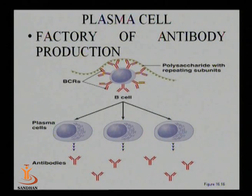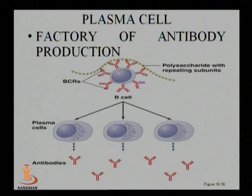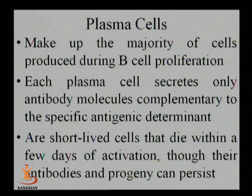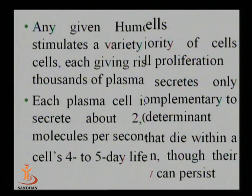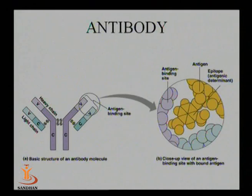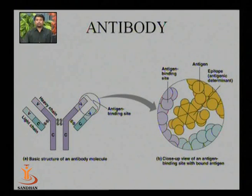Plasma cells are the next element of humoral immune response. B cells receiving specific instructions generate plasma cells, which are considered the factory of antibody. Plasma cells synthesize only a single-specificity antibody. They have the capacity to synthesize 2000 antibodies per second. Plasma cells have a cartwheel-like structure and a short lifespan of 4 to 5 days, during which they release thousands to lakhs of antibodies.